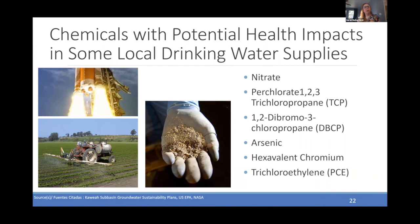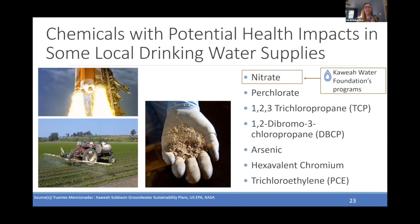Chemicals with potential health impacts in some local drinking water supplies include the list shown here, illustrated in some of the pictures to the left. Chemicals found within the Cahuilla service area groundwater supplies include nitrate, perchlorate, 1,2,3-trichloropropane (also called TCP), 1,2-dibromo-3-chloropropane (also known as DBCP), arsenic — which is a naturally occurring contaminant — hexavalent chromium, which is not, and trichloroethylene, also known as TCE. The Cahuilla Water Foundation program is focused solely on nitrates found in groundwater.